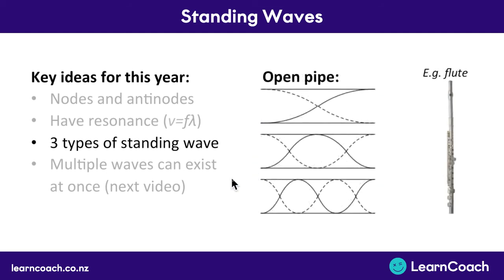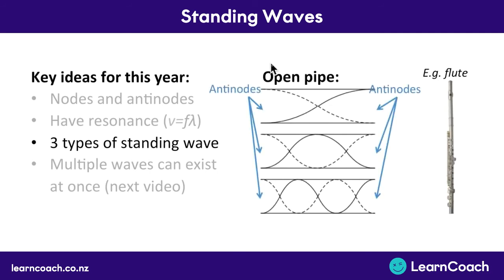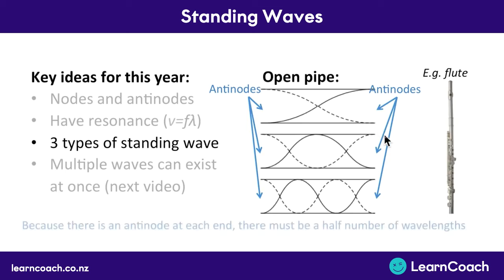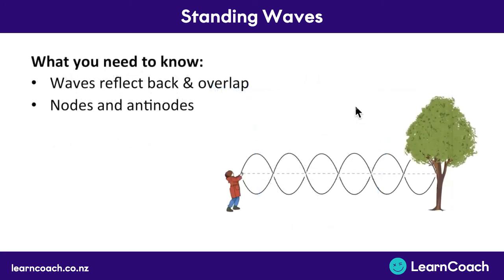Finally, we look at an open pipe. A string had two nodes, a closed pipe had one node and one antinode, and an open pipe has two antinodes — one at each open end. Again there's a half-number of wavelengths at the most basic level, going up in halves from there. You could have one full wavelength or one and a half wavelengths. Like a string it's made up of half-wavelengths, with the most basic being a half-wavelength, but different to a string these are antinodes at each end.